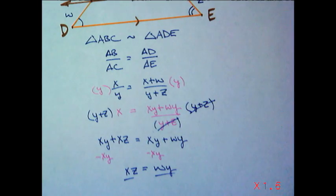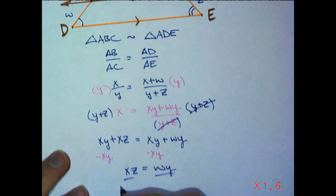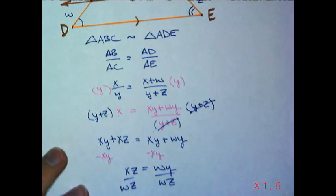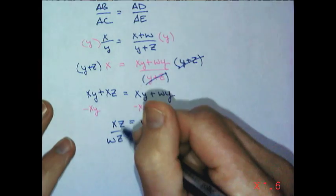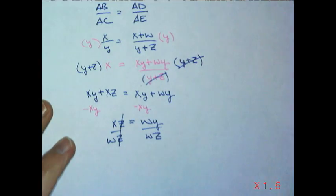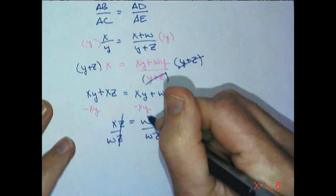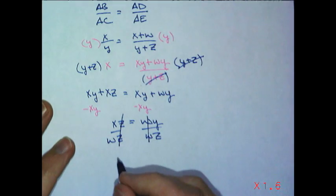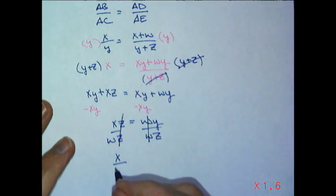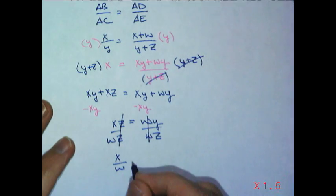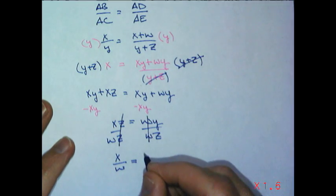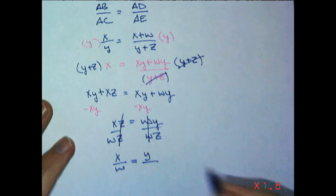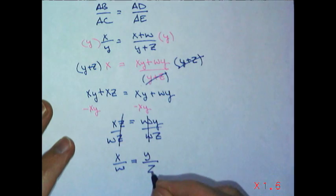And if I divide by WZ, kind of special, you can see the Z's cancel here. The W's cancel here. Leaving me with X compared to W is equal to Y compared to Z.